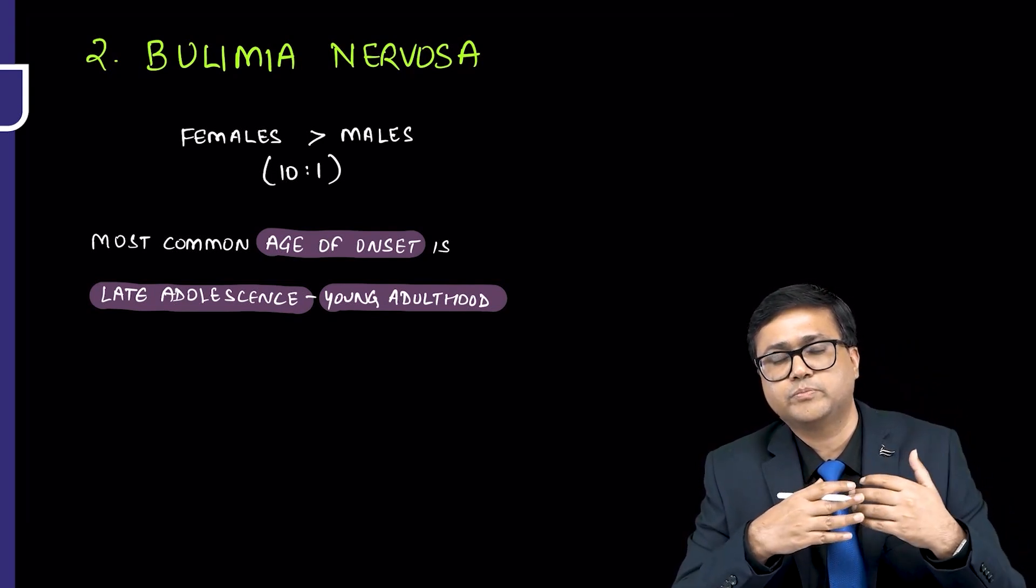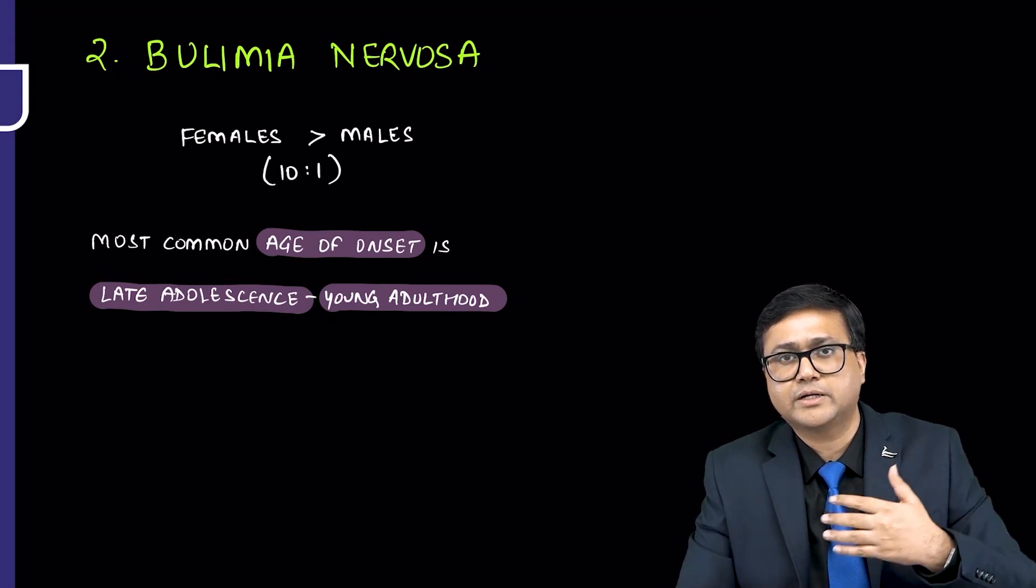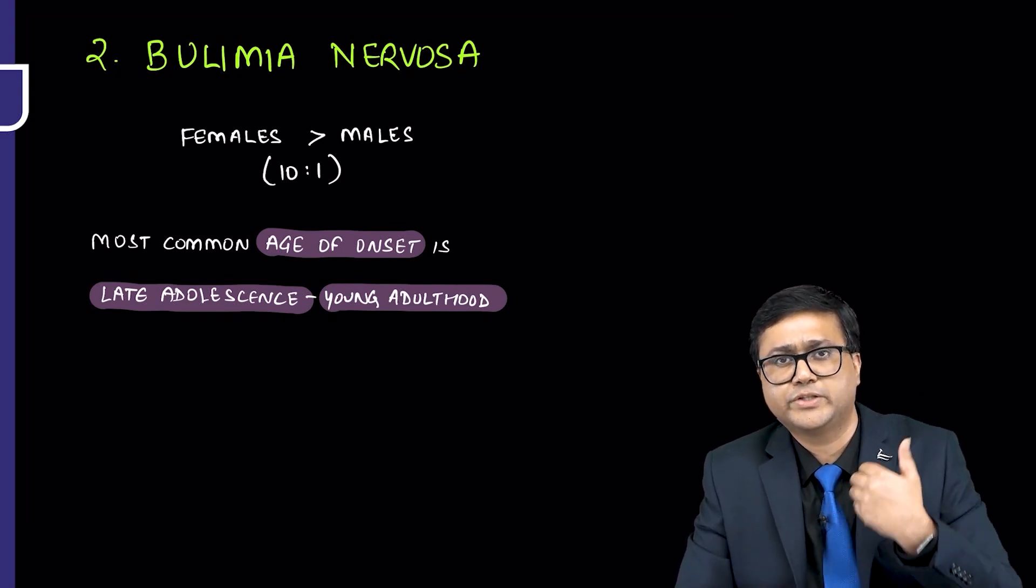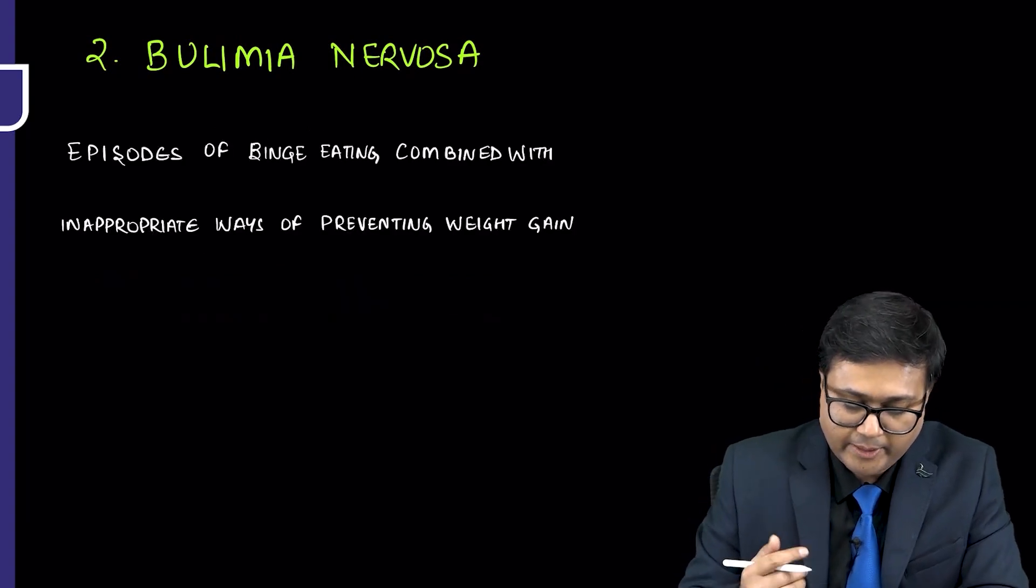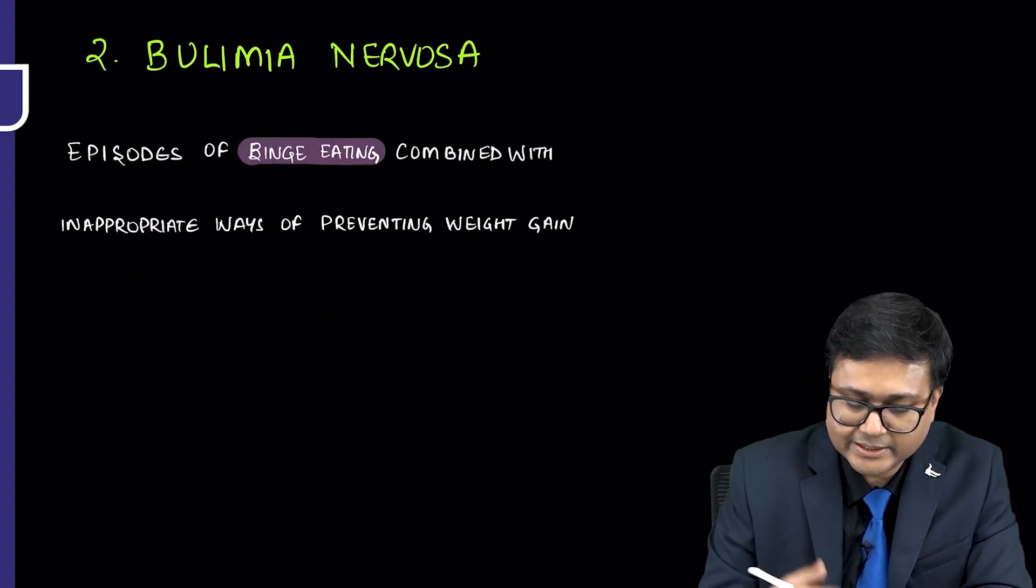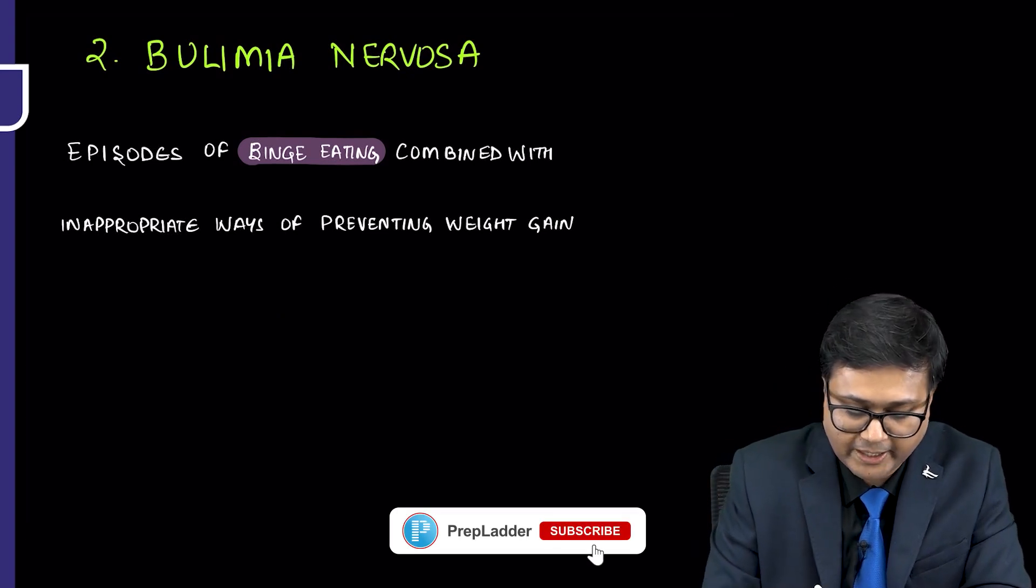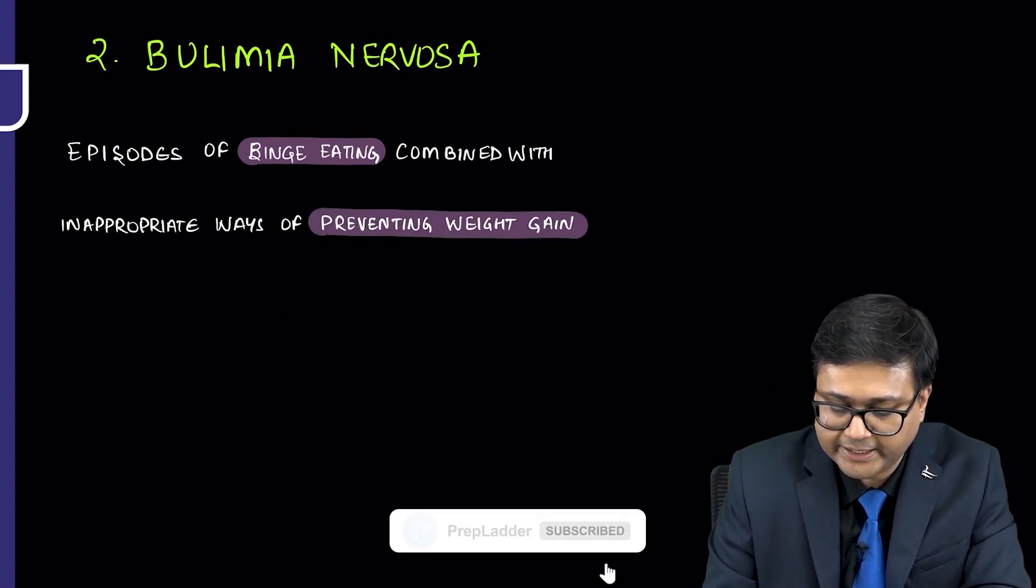Most common age of onset of bulimia nervosa is late adolescent or young adulthood. It is slightly later than anorexia nervosa. Anorexia nervosa was occurring between 14 to 18. They may occur 17, 18, 19, 20, 21, this age group more commonly.